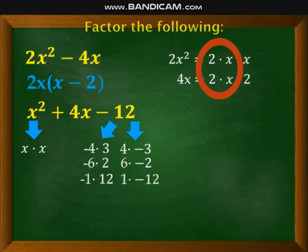From these factors of -12, since the coefficient of x² is just 1, we can easily get the factors by looking for positive 4. What gives positive 4 if you're going to subtract the factors? 6 and 2.